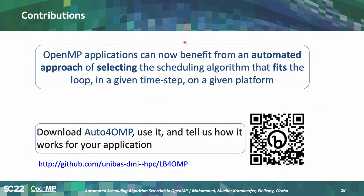We invite all of you to try auto for OpenMP. It is free and is an extension of the LLVM OpenMP runtime library available on the GitHub of the University of Basel — the extension is called LB for OpenMP. You can also use the QR code to reach the website. Please try it and tell us how it works for your application, and how we can improve it — we look forward to hearing your feedback.